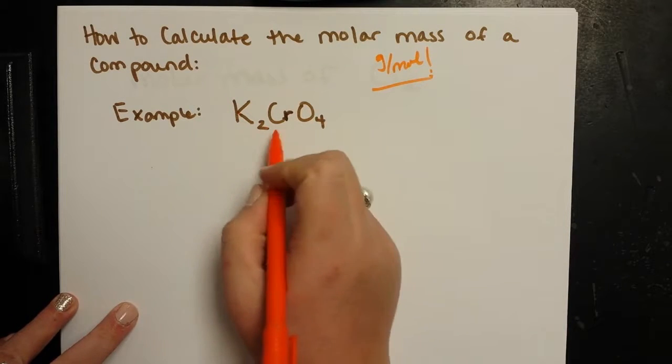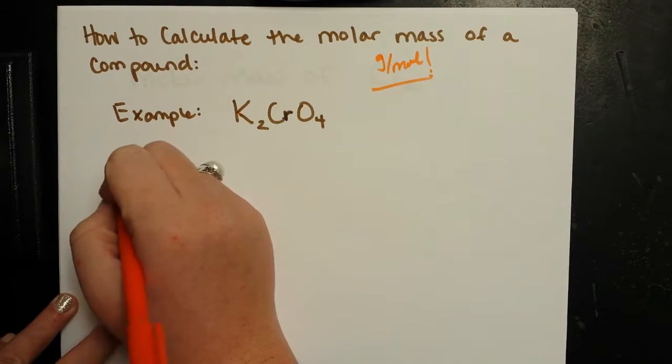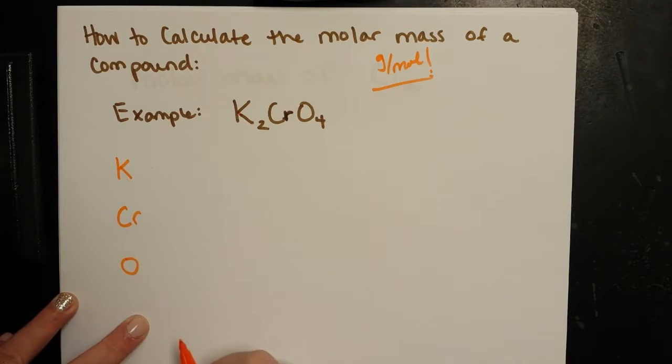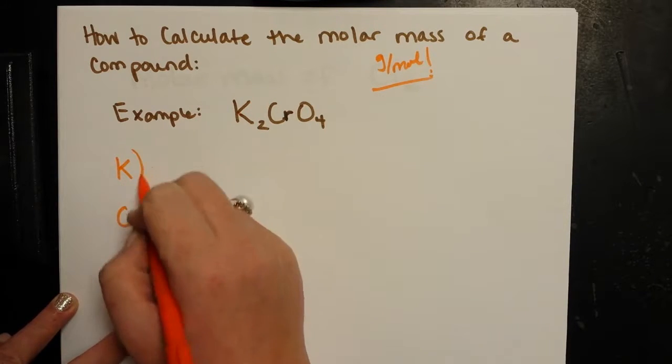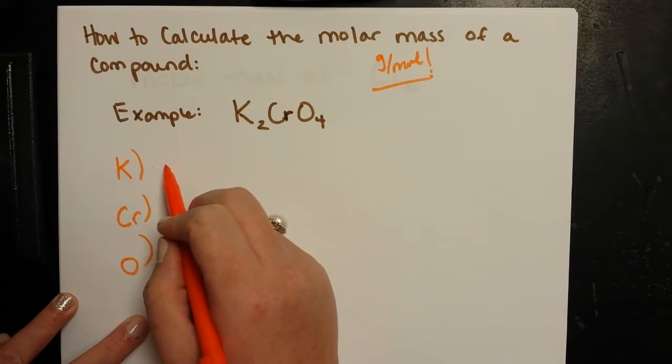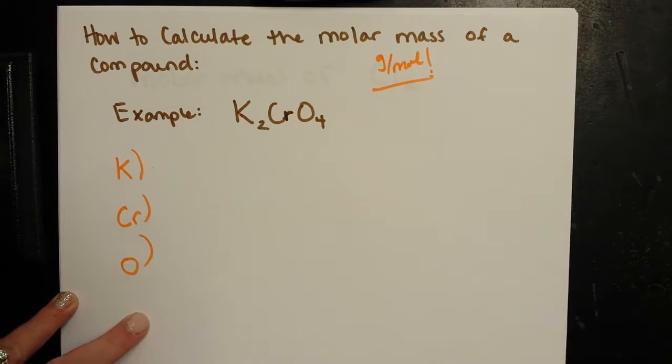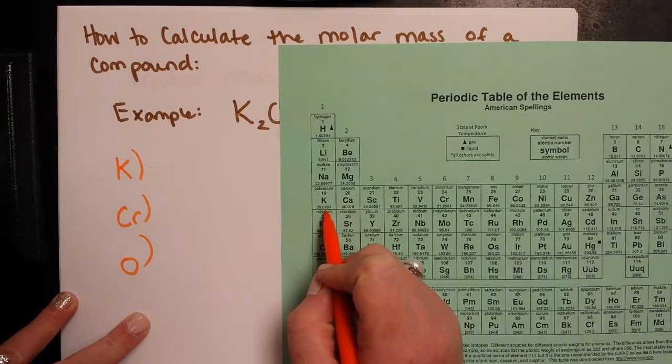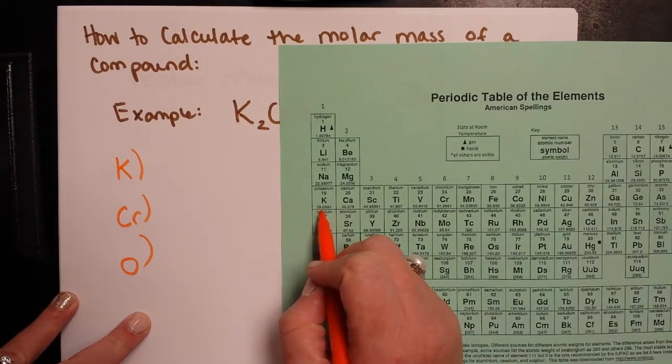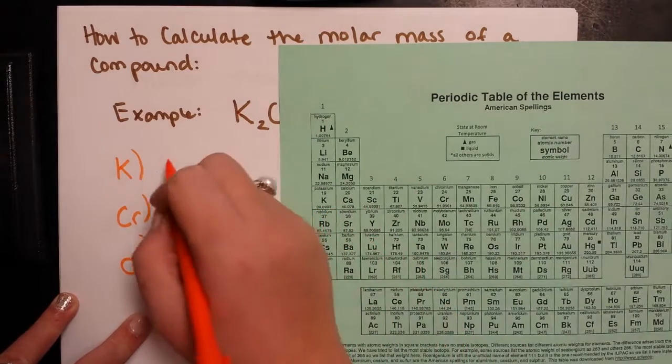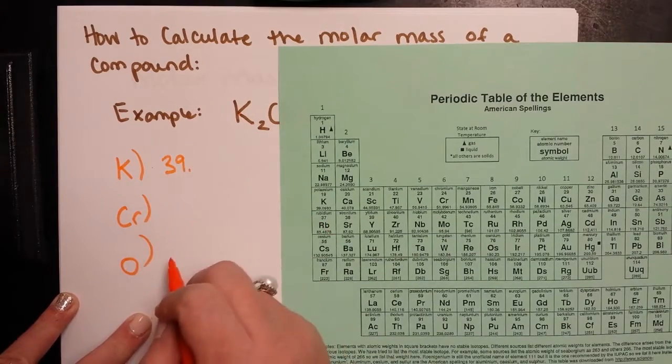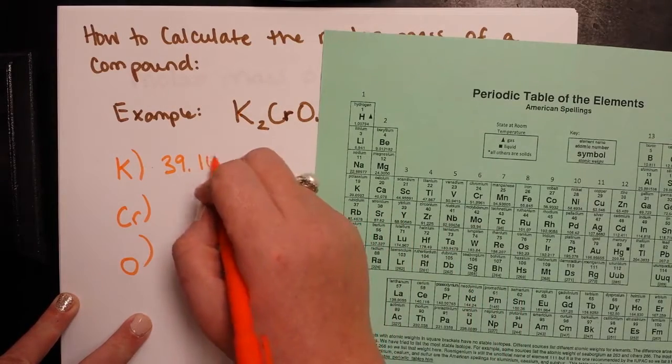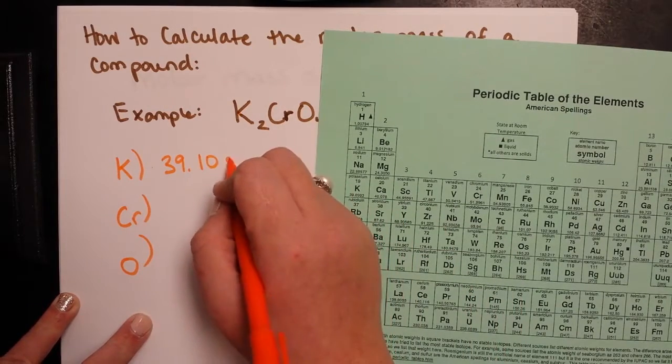So the way that I do this is I take my formula and I write out my elements. So here I've got potassium, chromium, and oxygen. I find the mass of each of these elements. So I'm going to look on the periodic table, and potassium's got a mass, and you know, you can round them to two decimal places. Here I've got 39.0983. So I'm going to do 39.10, because 0.98 would round up to that. And that's grams per mole. So that's the molar mass of potassium.